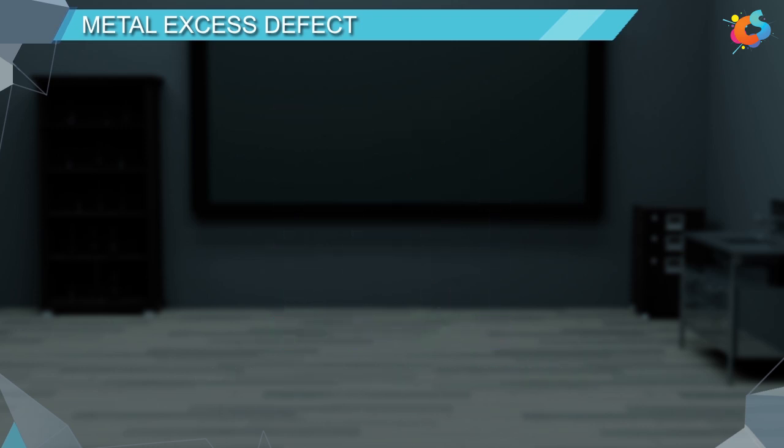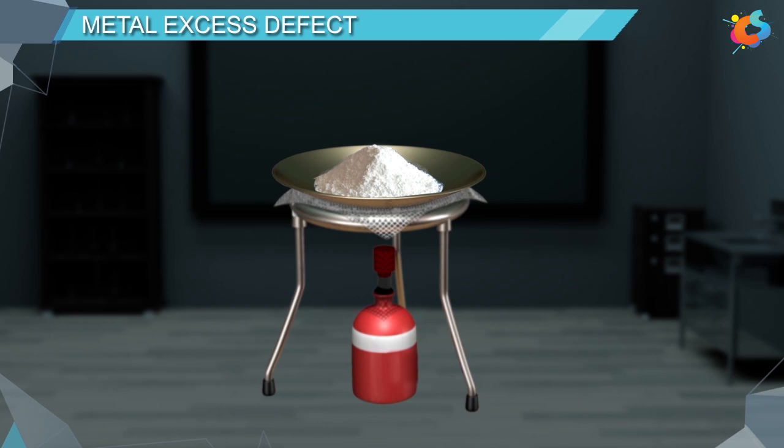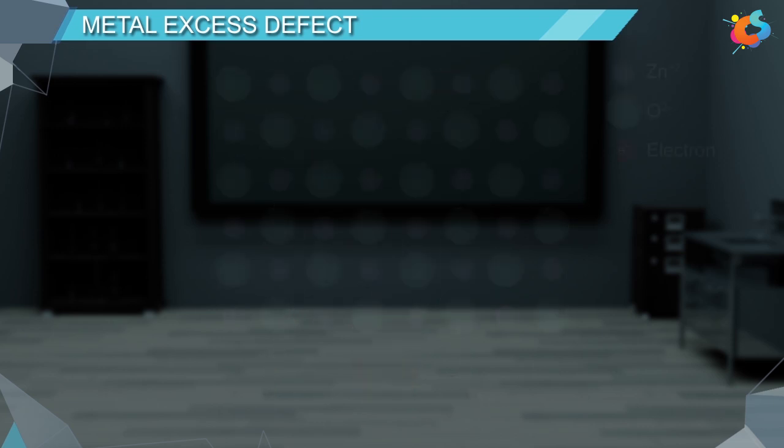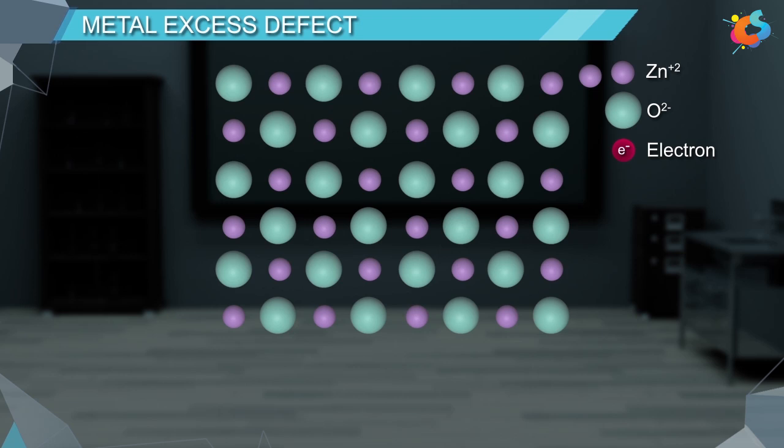Example: Zinc oxide is white or colorless solid at room temperature. But when zinc oxide is heated, it loses oxygen and turns yellow color. ZnO gives Zn2+ plus 1/2 O2 plus 2 electrons on heating. The excess Zn2+ ion gets trapped into the interstitial sites and the released electrons get trapped in its neighboring interstitial sites and maintain the electrical neutrality.